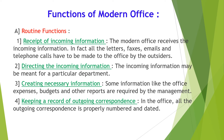Functions of modern office — the main category is routine functions. The first routine function is receipt of incoming information. The modern office receives incoming information; all letters, faxes, emails and telephone calls are made to the office by outsiders. A separate register is maintained to record the details of all incoming correspondence. A telephone call register or data collected into a computer is maintained to record all inquiries. This facilitates timely feedback.